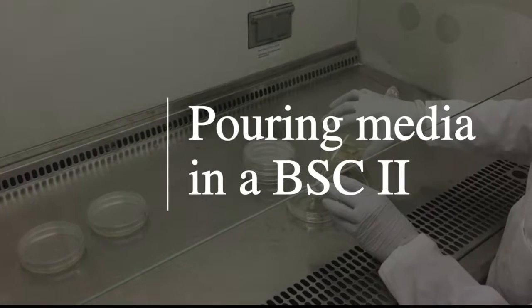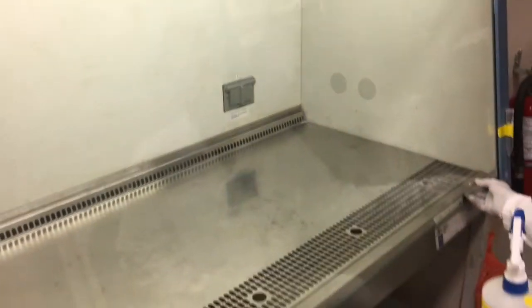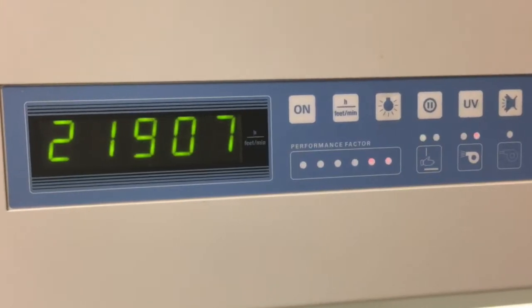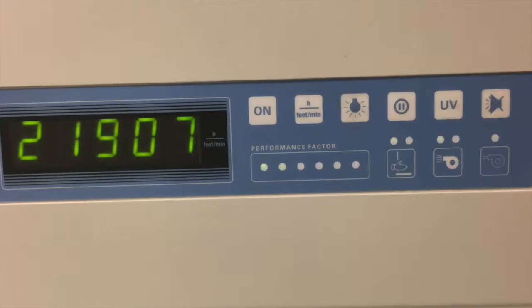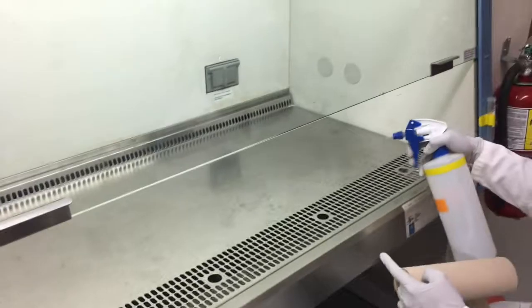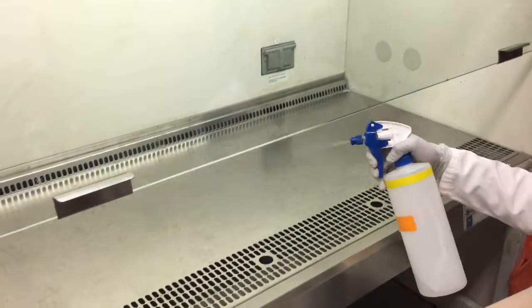Some people prefer to pour their media within a biosafety cabinet. Lift the sash to the operating height and wait for the airflow to stabilize. This model has indicator lights that change from red to green when the cabinet is ready for use. Spray the surface of the cabinet with 70% ethanol before beginning.